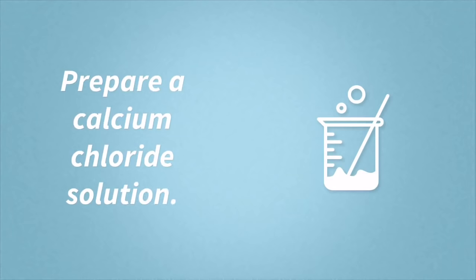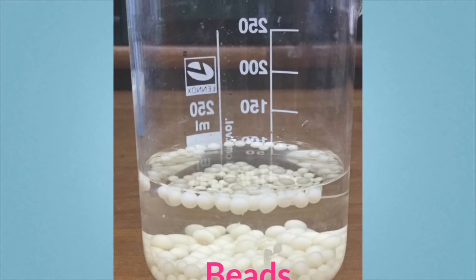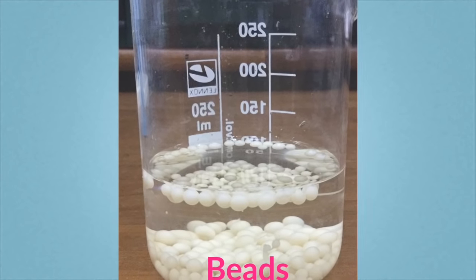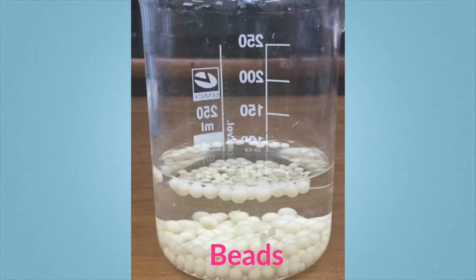Separately, a calcium chloride solution was prepared. The next step involved drawing up the yeast and sodium alginate mixture into a syringe. Very slowly, small amounts of the yeast and sodium alginate mixture were dropped from the syringe into the beaker of calcium chloride solution.